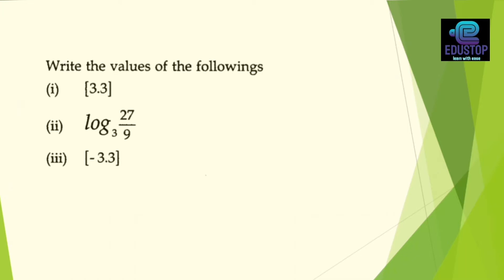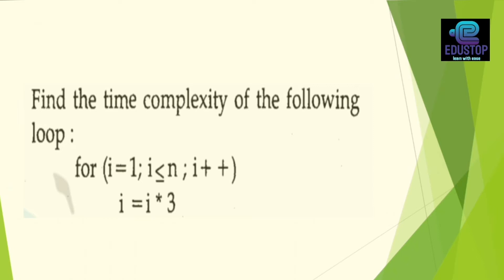You will find out values like floor of 3.3, log 3.27 upon 9, floor of minus 3.3 in square brackets. These values should come to find out. Next, you will find the time complexity of the following loop. There is a for loop here, I have taken a simple loop. There is a statement in this for loop. What is the time complexity? Based on this question, I have taken an example problem. This is important.